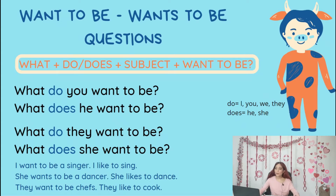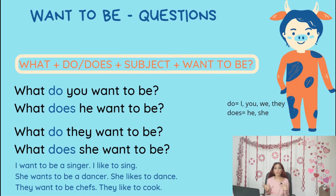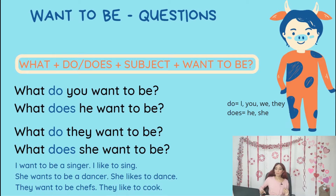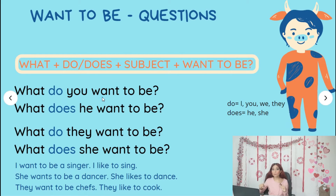Then, we are going to learn how to write questions with 'want to be.' In this case, we are not going to use 'wants to be.' Let's see why. This is the main formula and it's super important that you have these two in your notebooks. Copy this on your notebooks because this is super, super, super important.